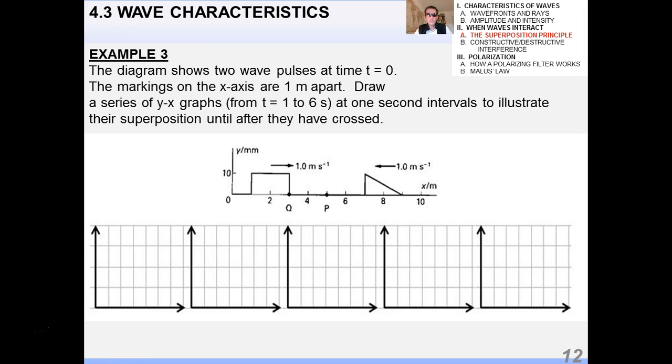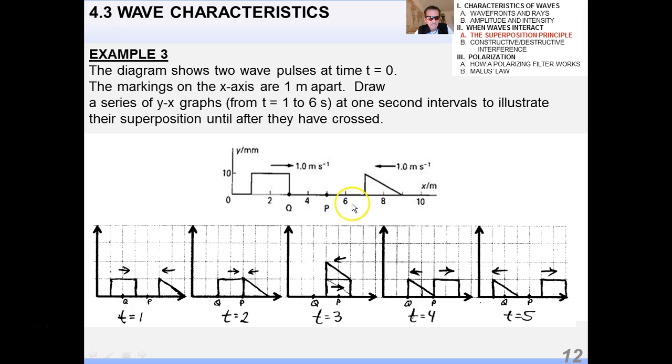So the first example in this video, you're going to need to spend a little bit of time on this one. So I have a diagram showing two wave pulses at time t equals 0, and you can see that the wave pulses are traveling towards each other at 1 meter per second. The markings on the x-axis are 1 meter apart. Draw a series of y-x graphs from 1 to 6 seconds at 1 second intervals to illustrate their superposition until they have crossed or passed through one another. Let me walk you through this. At t equals 1, because they're moving 1 meter per second and each tick mark on the x-axis is 1 meter, at 1 second they're one block closer to one another. So they're separated by two blocks, as shown in the first diagram. In the second one, they're just touching each other. In the third one, they're exactly over top of each other. So this result at 3 seconds is when you have the highest amplitude resulting wave according to the principle of superposition. At t equals 4, they've just gone past each other. And at t equals 5, they're actually 2 meters apart. So you want to study that carefully and make sure you understand that.